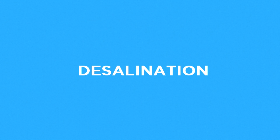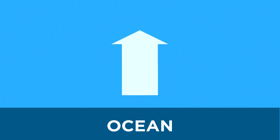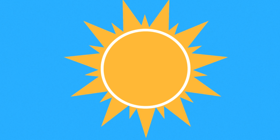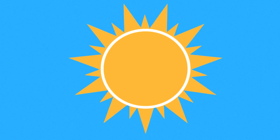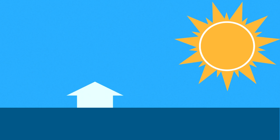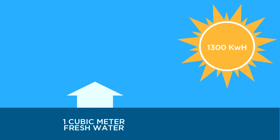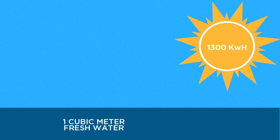First, desalination. Did you know that the ocean is the source of all your fresh water? About 60 million gigawatts of power from the sun reaches the ocean surface, desalinating 413,000 cubic kilometers of fresh water per year. This is an average efficiency of 1,300 kilowatt hours of energy per cubic meter of fresh water produced.